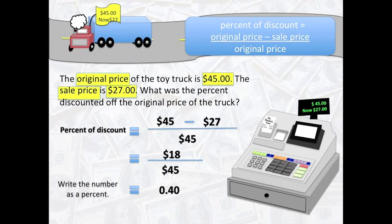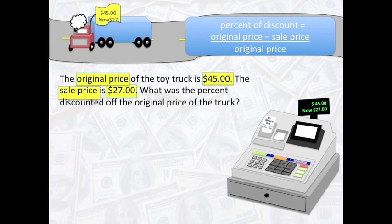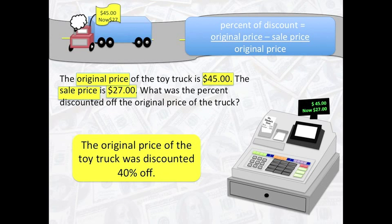Now, we have to write the number as a percent. So, we need to multiply our quotient, 4 tenths, by 100 in order to get a product of 40. Thus, the original price of the toy truck was discounted by 40%.